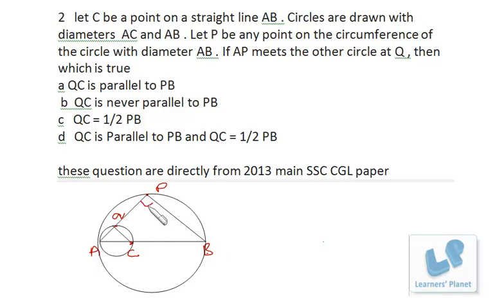And similarly AC is diameter, so angle AQC will be 90 degrees. So this angle is 90 degrees, this angle is 90 degrees. That means these are corresponding angles. That means line QC is parallel to line PB, right.